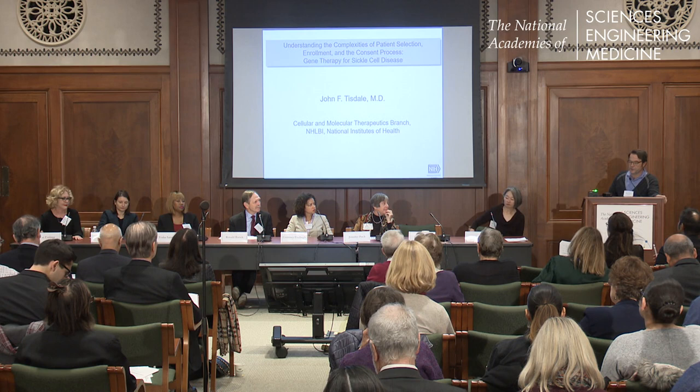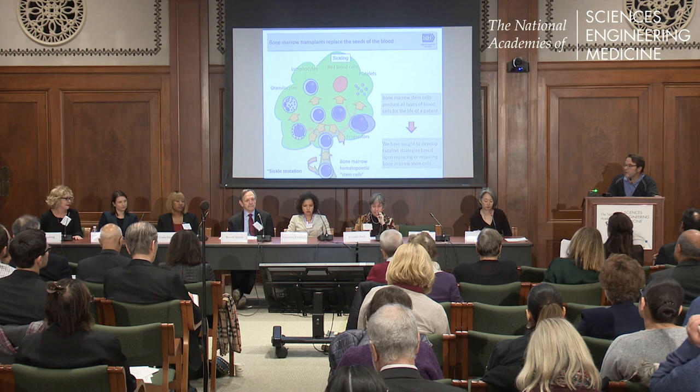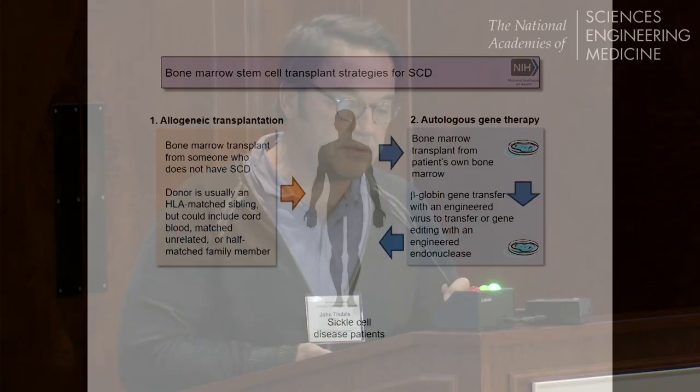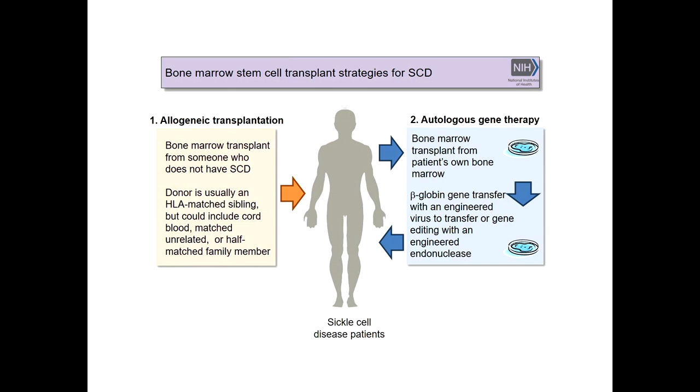Courtney provided a very good introduction to sickle cell disease and what we're up to at the NIH. I'm going to extend this to the gene therapy setting and remind you that the way we're going about doing this is to either replace the bone marrow stem cells that make all the components of the blood, or repairing them by adding a copy of the correctly spelled gene back to those bone marrow stem cells.